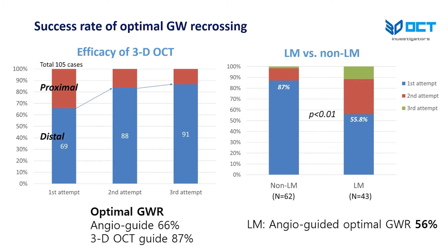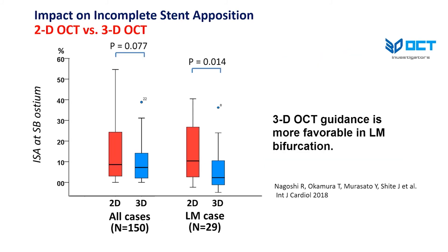We also investigated the success rate of optimal distal wiring in 3D OCT-guided PCI. In the first attempt with angio-guidance, success was only 66%. Accumulating attempts elevated the success rate to 87%. In the comparison between left main and non-left main bifurcation, success rate with angio-guidance was only 56% — very low. In the comparison between 2D and 3D OCT guidance for impact on incomplete stent apposition in left main bifurcation, 3D OCT guidance was more favorable than 2D OCT.